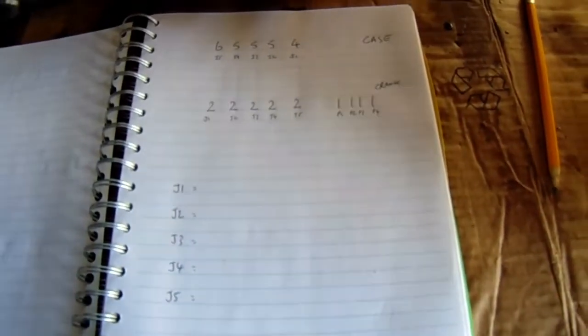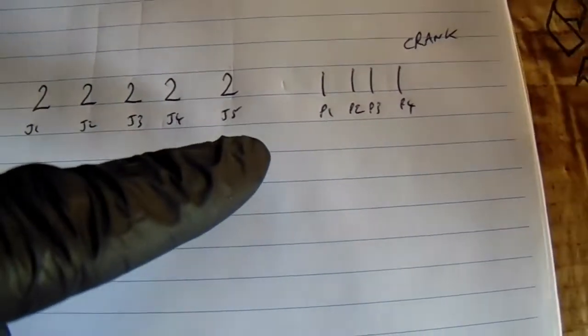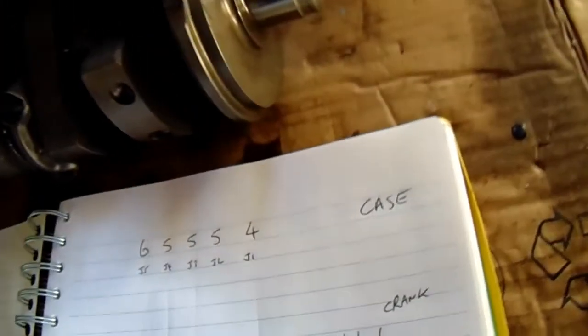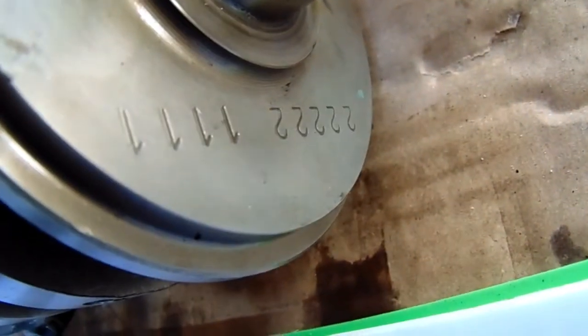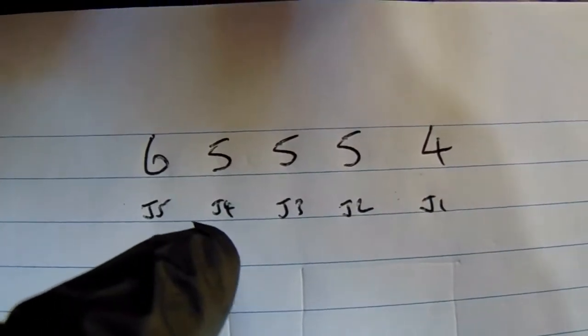So today what we're going to do is use the numbers that are on the crankcase and the crankshaft. So these are the numbers on the crankshaft. If I can see it there look, we've got 222221111 and this is the number on the crankcase, 65554.